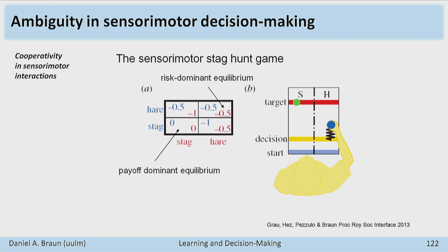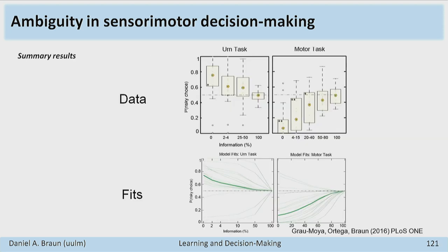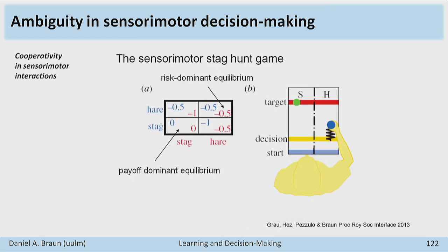Over time this ambiguity attitude is washed out as more data comes in. But this initial attitude towards ambiguity has a big effect on which equilibrium you converge to. If both players are optimistic, you'll likely end up in a cooperative scenario. If both are ambiguity-averse, you'll likely end up in the non-cooperative scenario.